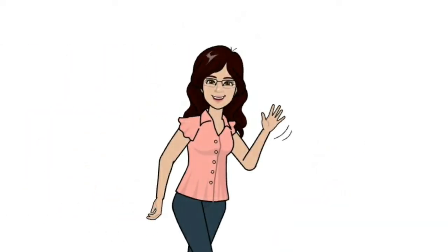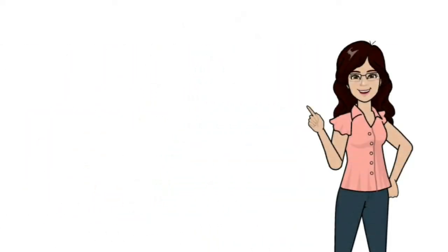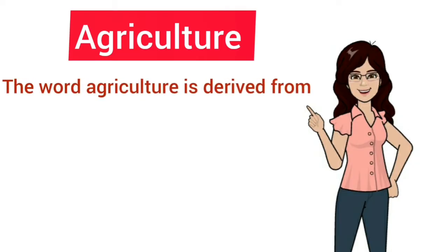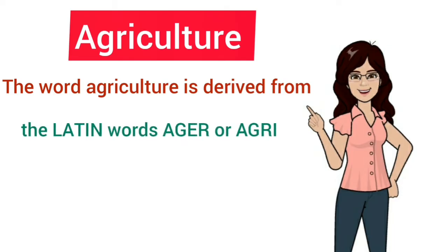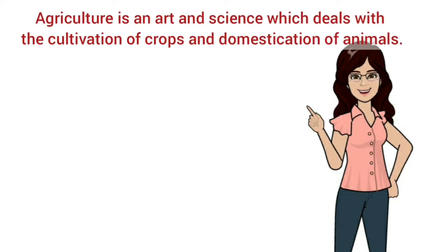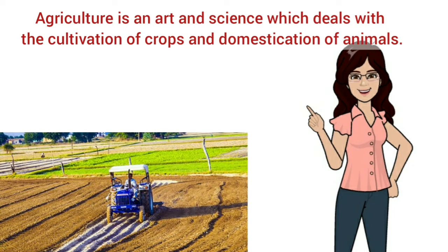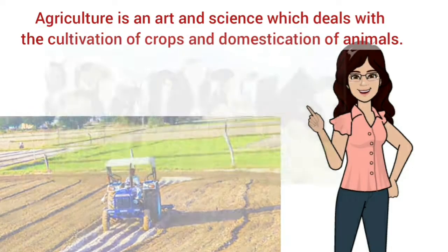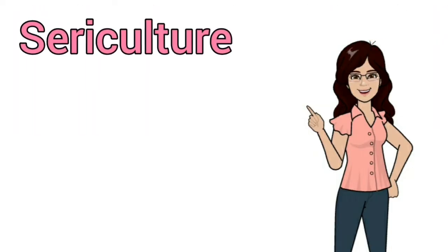Let us go back to primary activity, because in this chapter we have to study mainly about agriculture, which is a primary activity. The word agriculture is derived from the Latin words 'ager' or 'agri' meaning soil, and 'cultura' meaning cultivation. Thus agriculture is an art and science which deals with the cultivation of crops and domestication of animals.